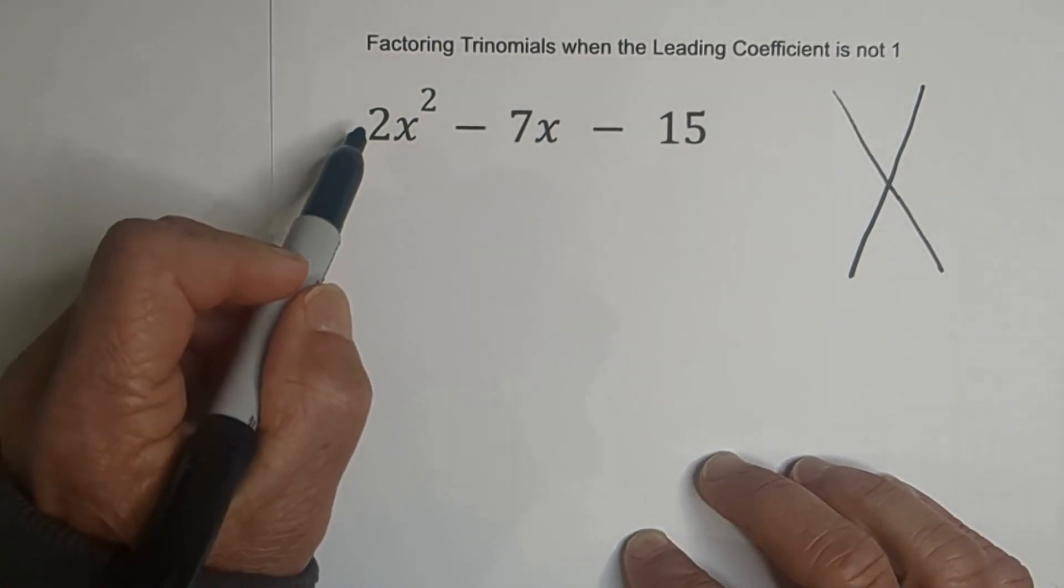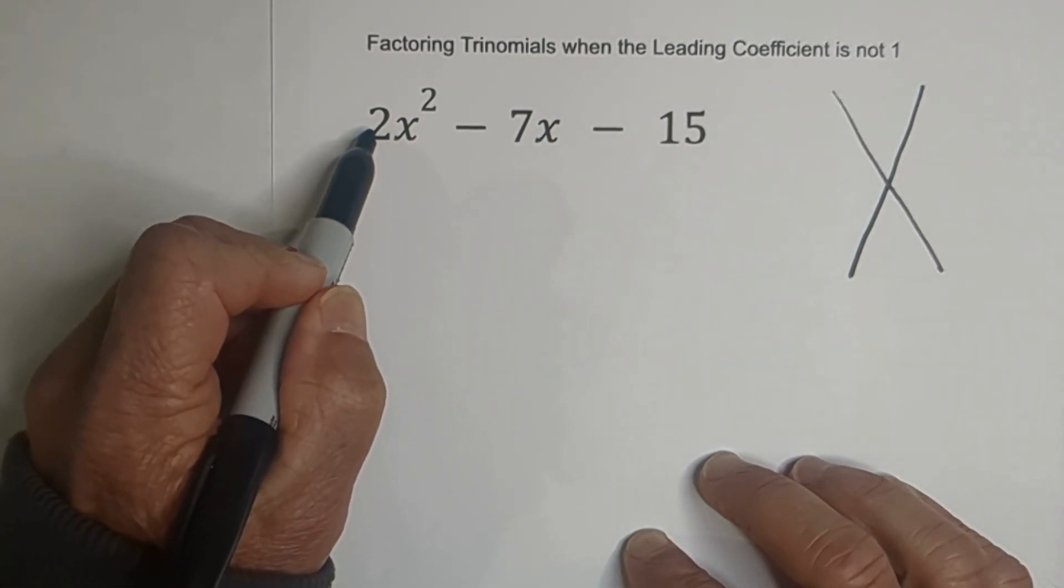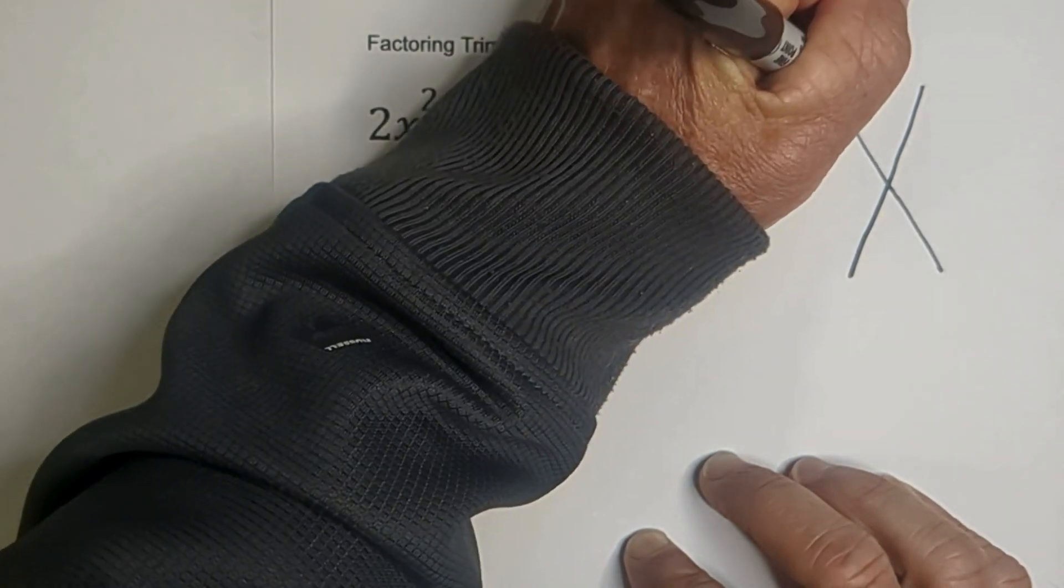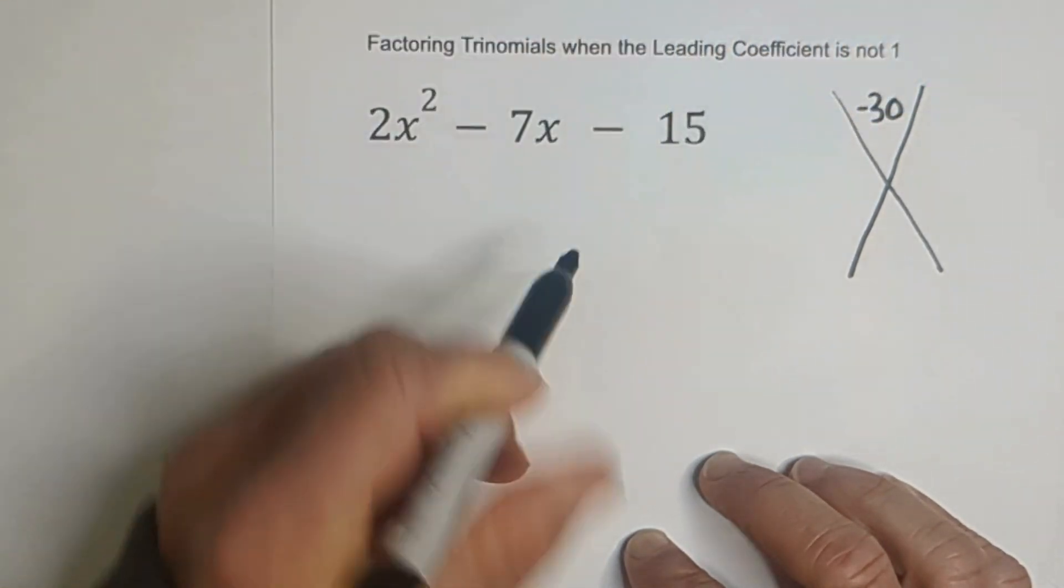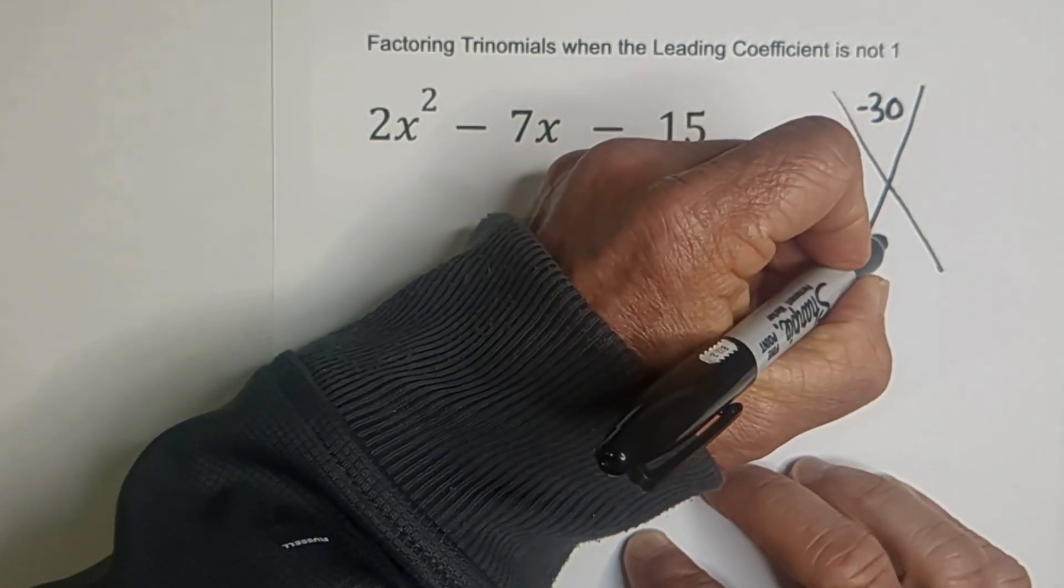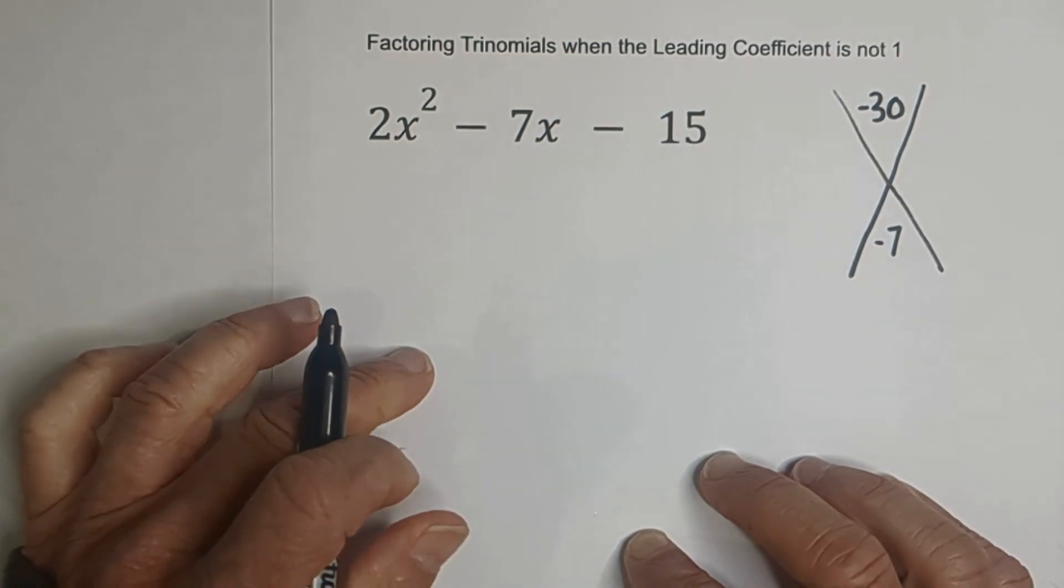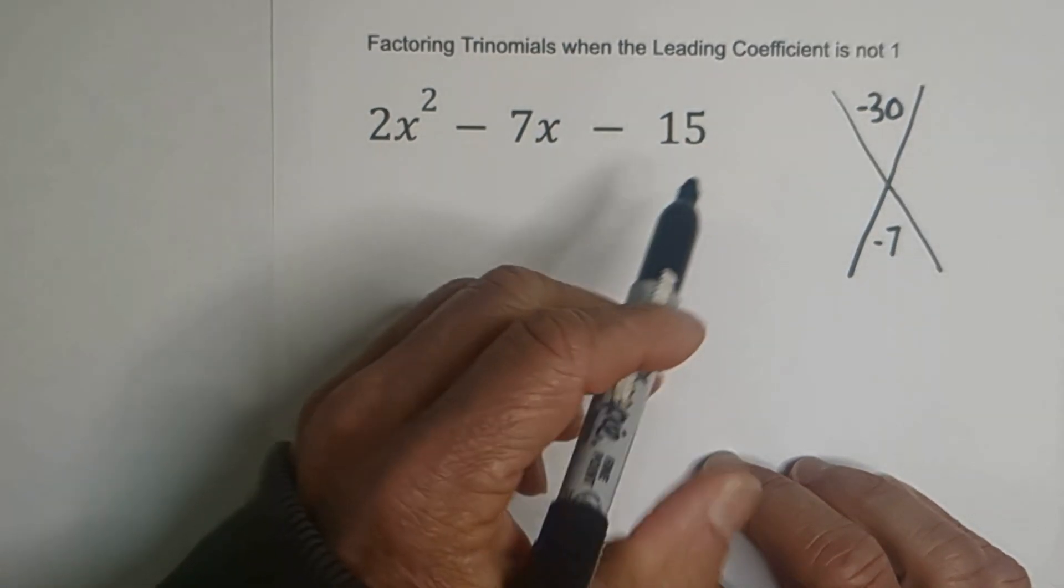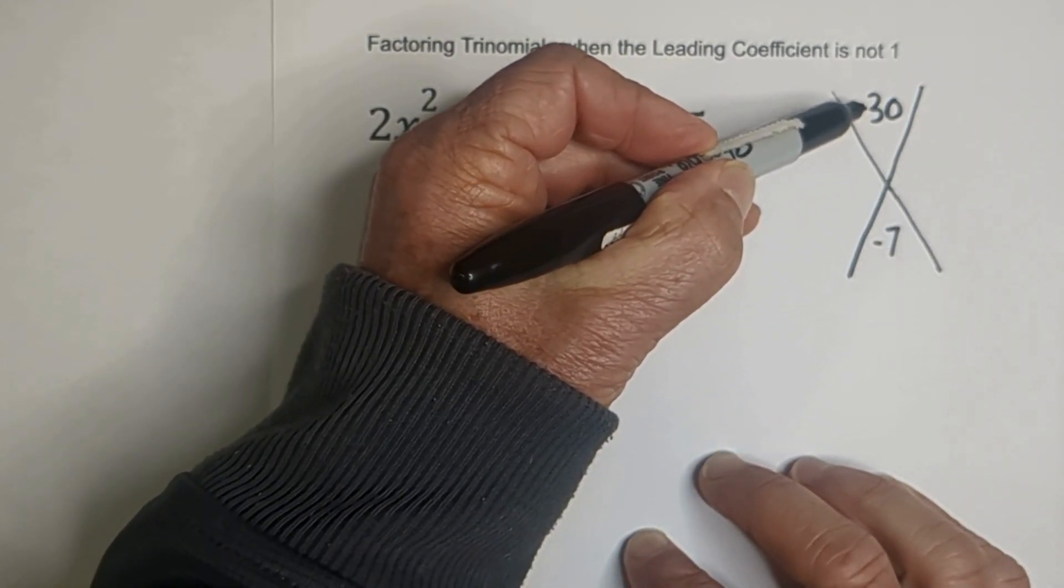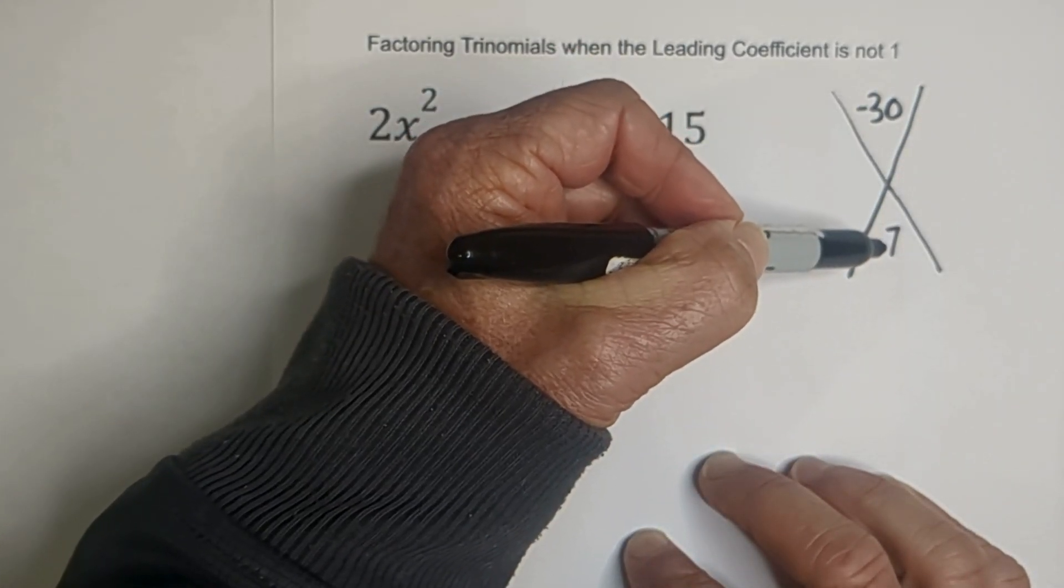Step 1 is we're going to take the first coefficient and multiply it by the third term. So we've got 2 times negative 15 and that is negative 30. Next, we're just going to take the middle term and we'll write it at the bottom, negative 7. Now what we need to do is find two numbers when you multiply together equal this top term and add together equal the bottom.